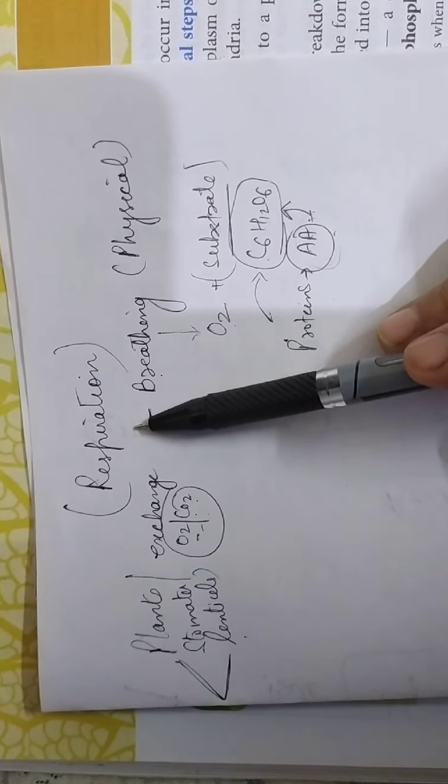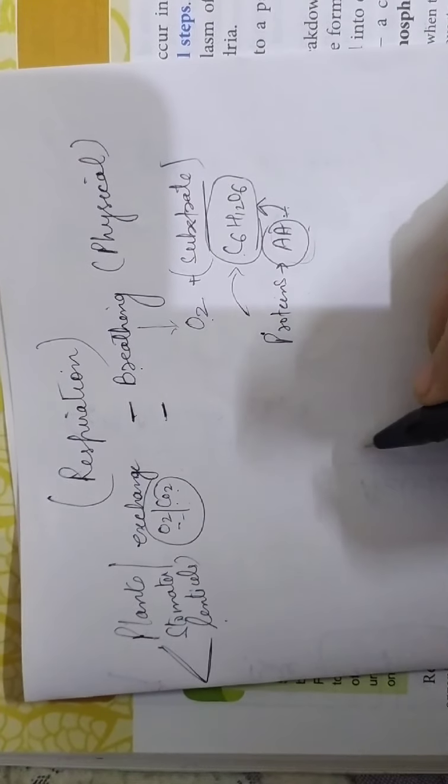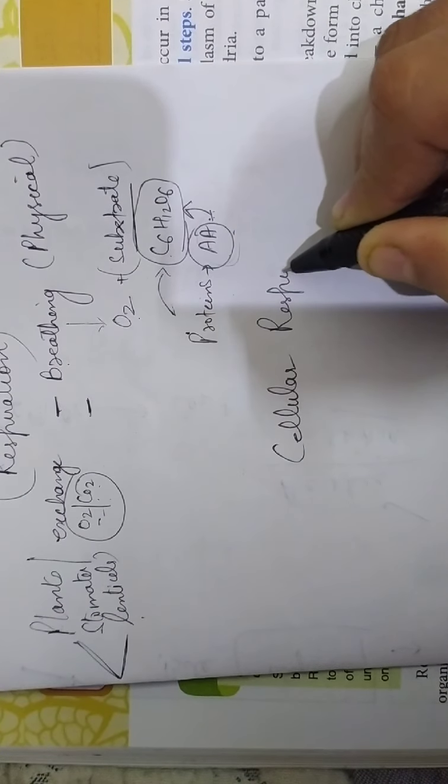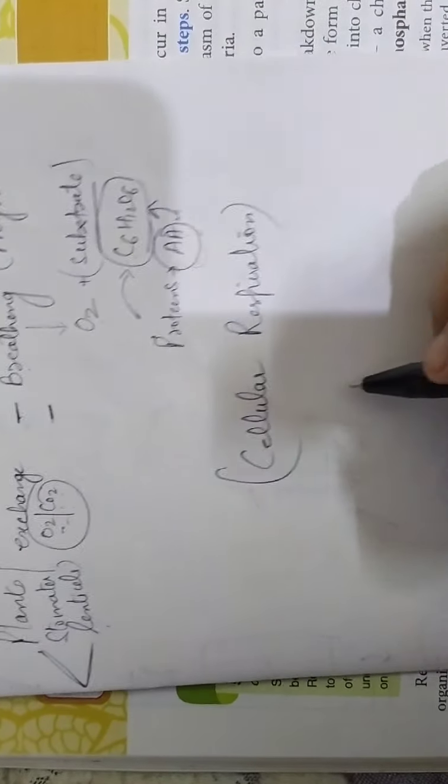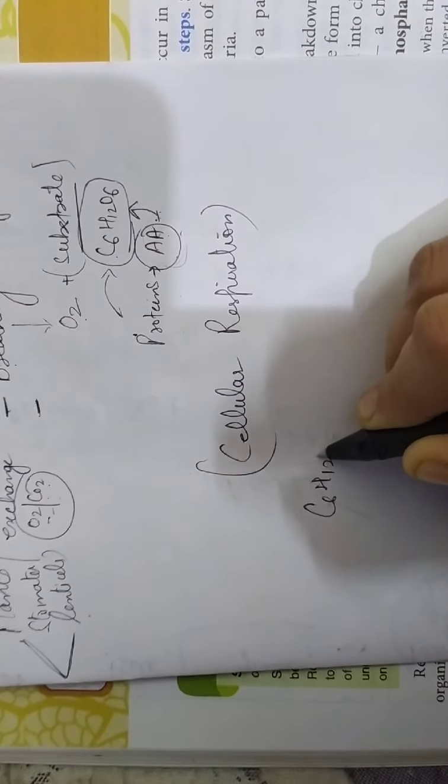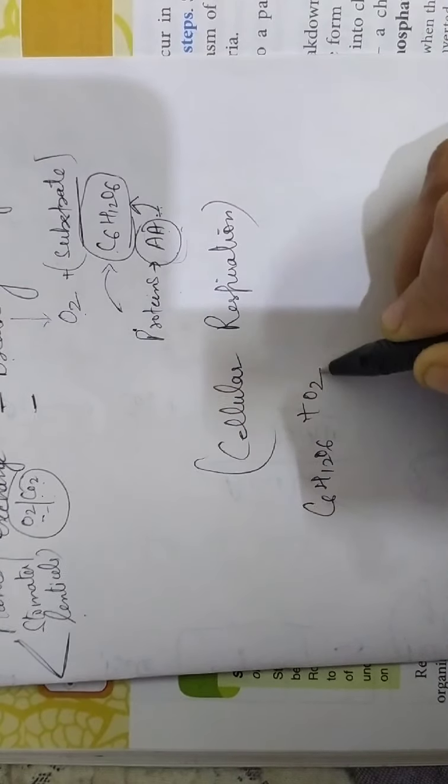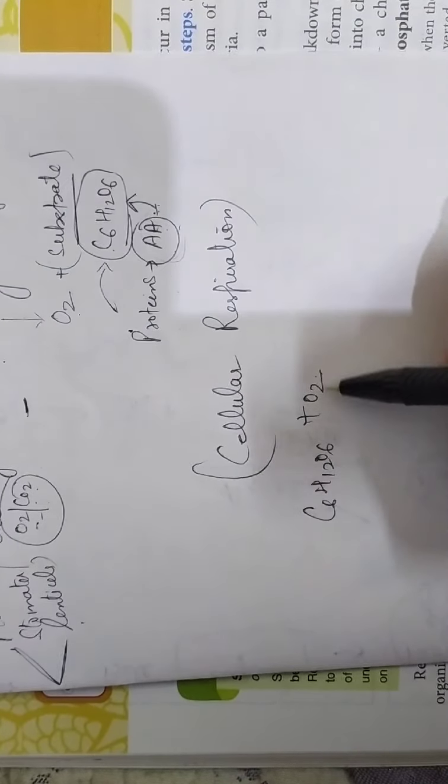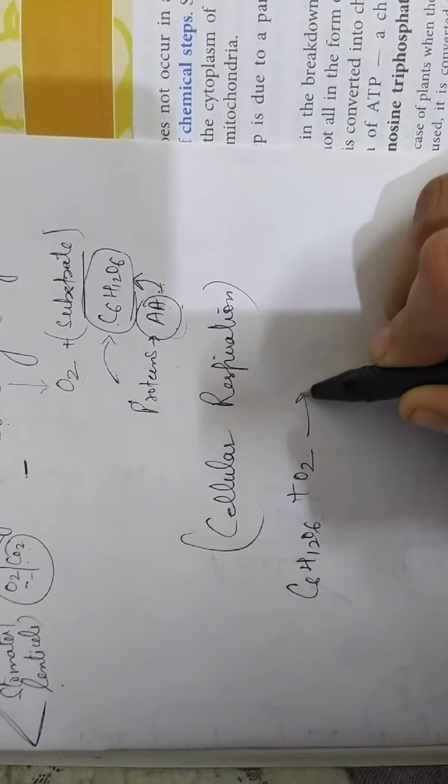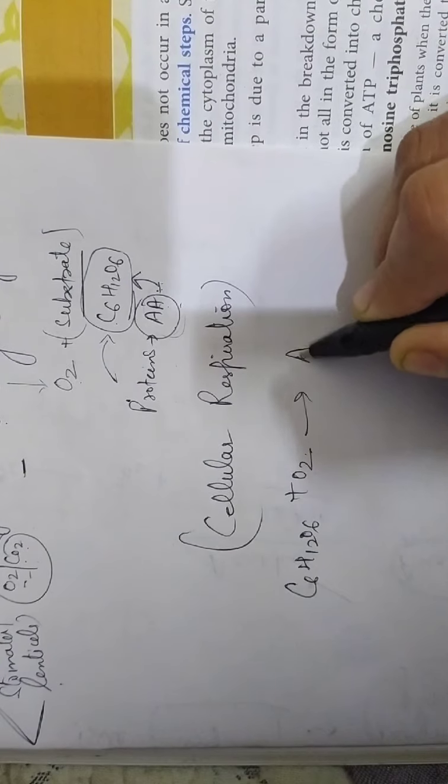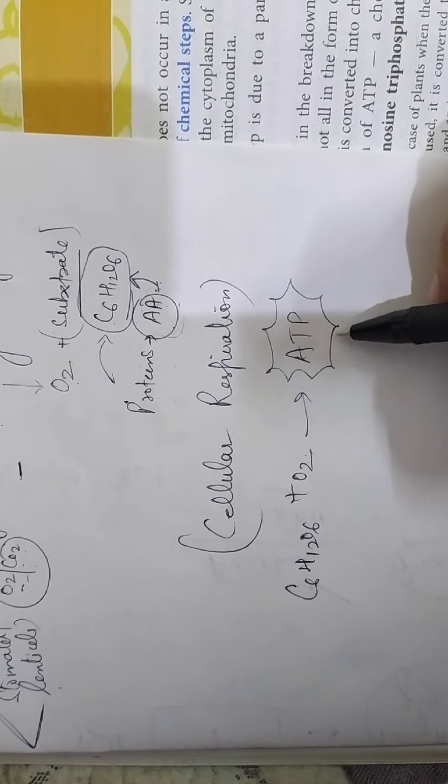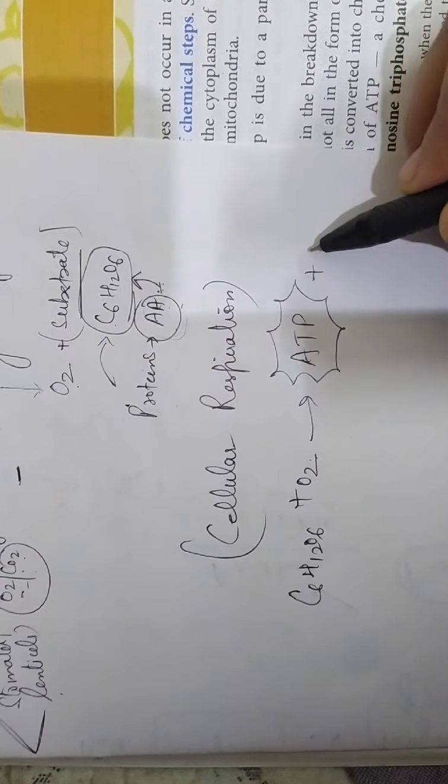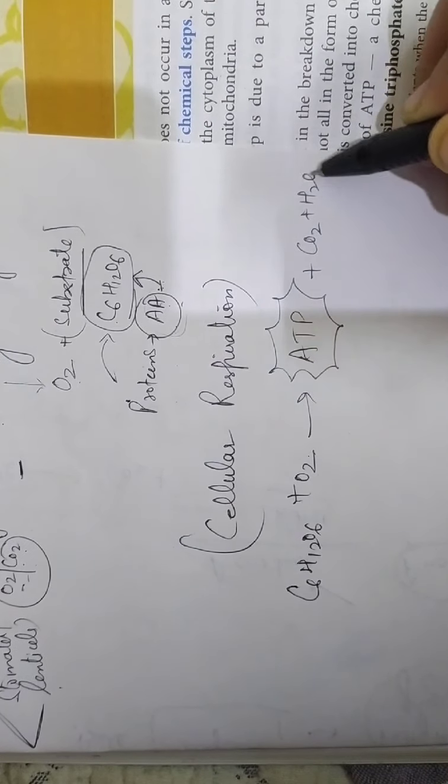The second part of respiration includes cellular respiration. Instead of calling it respiration, we must call it cellular respiration because this whole process is taking place inside the cells. Inside the cells the substrate which is glucose molecule will be oxidized or broken down by oxygen. The purpose is to release energy.